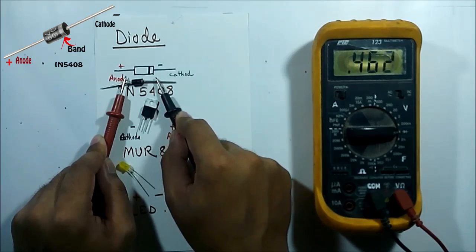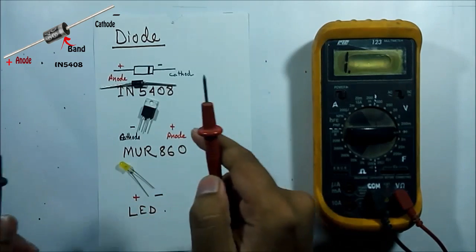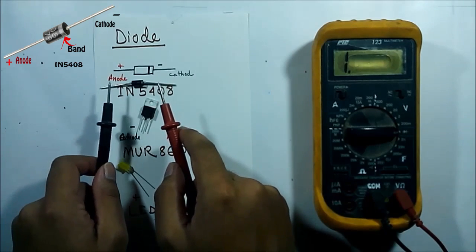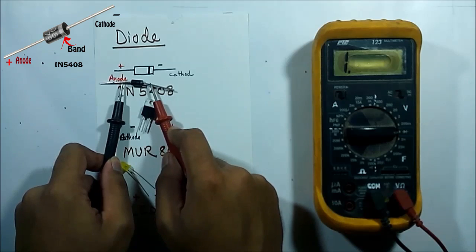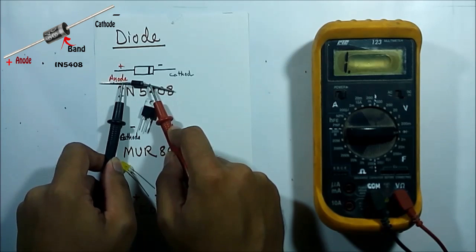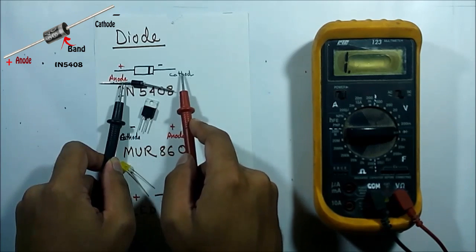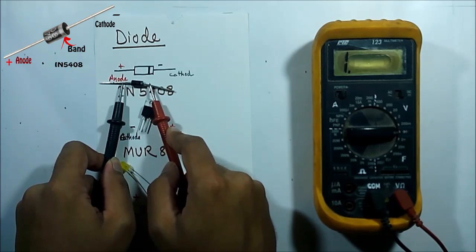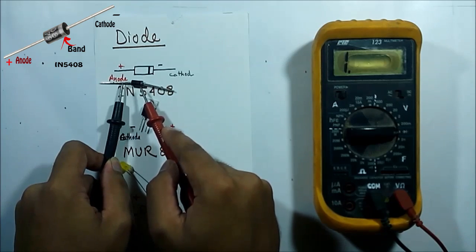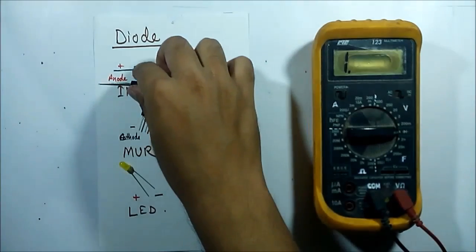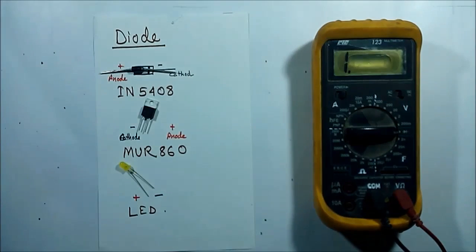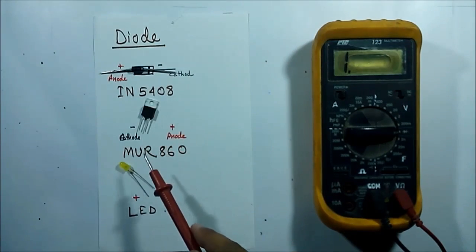But if I reverse the leads — connecting the black lead to the anode and the red lead to the cathode — you can see it's open circuit, so current cannot flow from cathode to anode. This diode is okay. The band is here, which indicates this is the cathode.